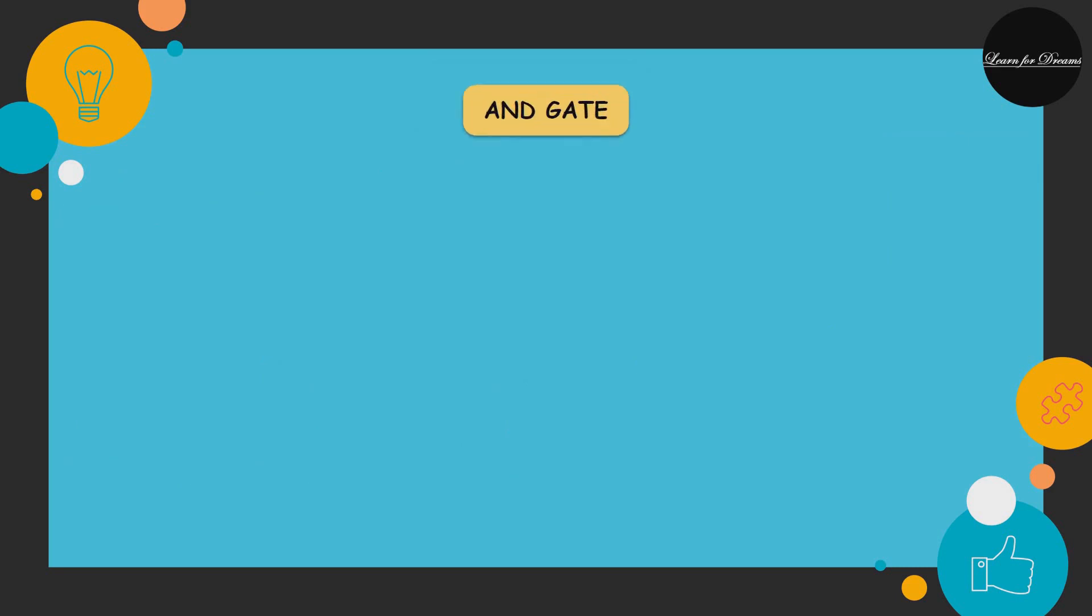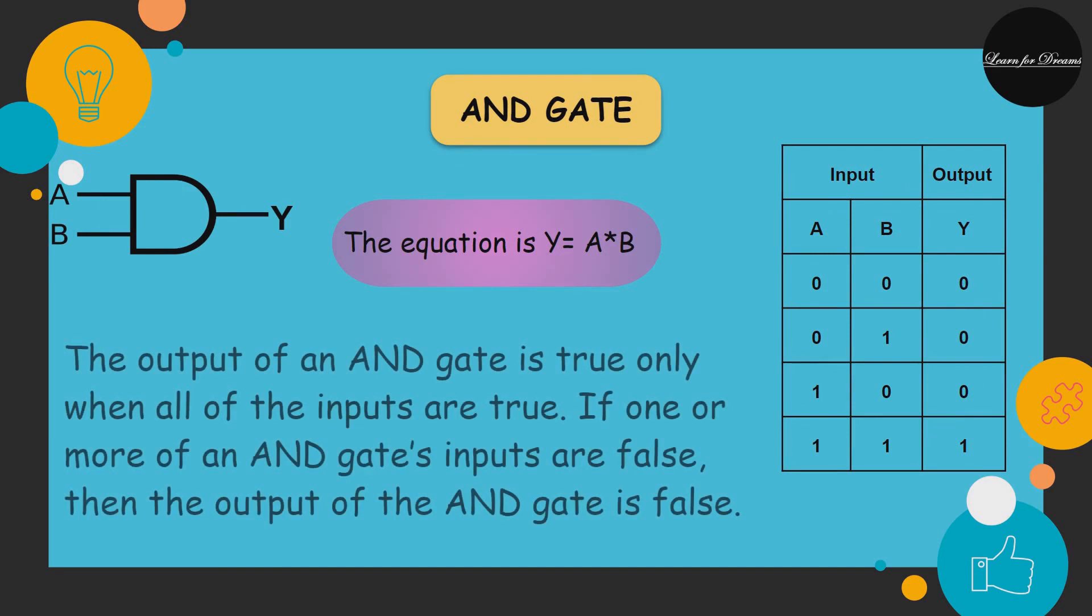Now let's see the AND gate. AND gate is a digital logic gate with two or more inputs and only one output that performs logical conjunction. As you can see in this truth table, the output of an AND gate is true only when all the inputs are true.